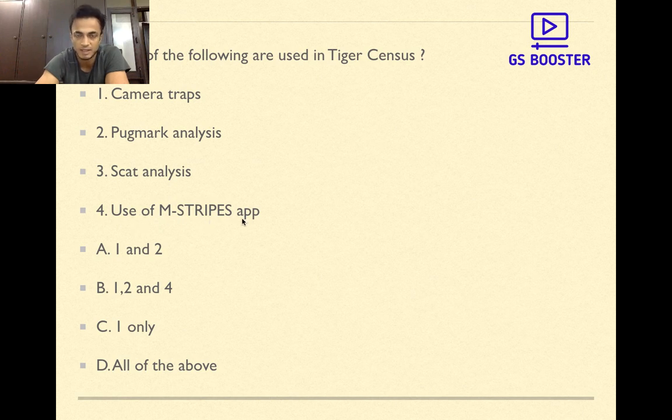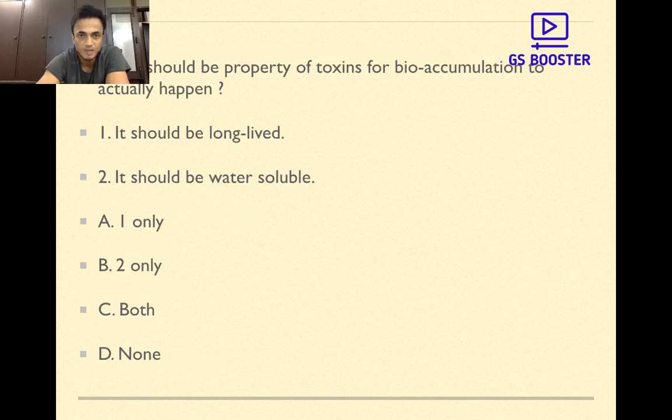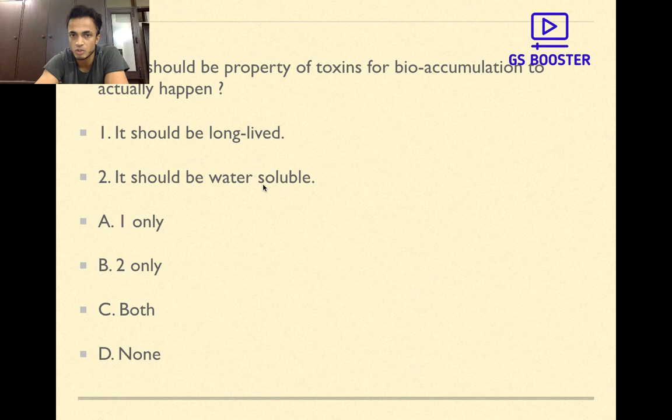that is what should be the property of toxins for bioaccumulation to actually happen? It should be long-lived, it should be water-soluble. The answer is A, one only. It should be long-lived. Second is wrong - it should be fat-soluble, not water-soluble. If it's water-soluble then at any trophic level, the organism's body will excrete it out.